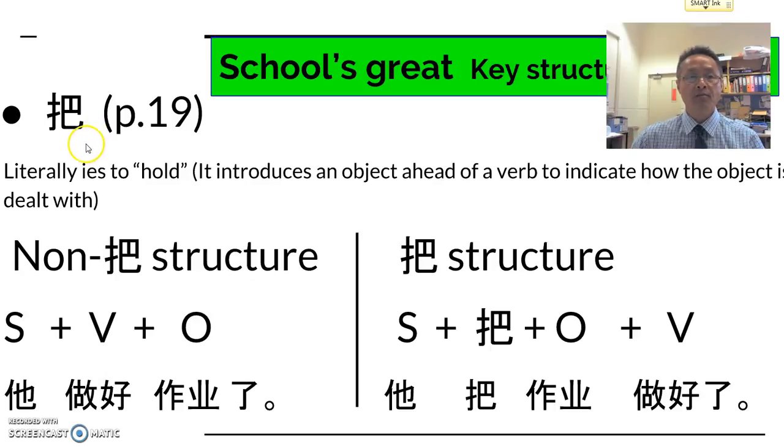The 把 structure literally means to hold or to take. It introduces an object ahead of a verb to indicate how the object is dealt with. If we first look at the non-把 structure, most Chinese simple sentences are subject, verb, and then the object.